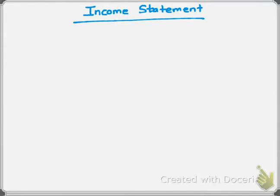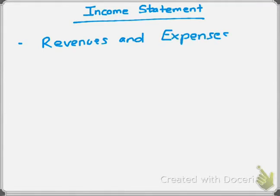The first statement we're going to go through is the income statement. The income statement lists revenues and expenses — you need to remember the format and what each statement contains. The income statement calculates profits, and it tells whether a company has made a profit or a loss.